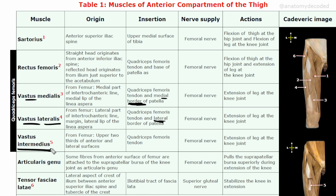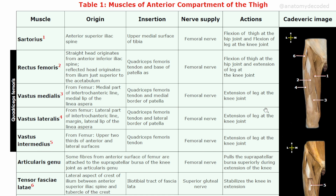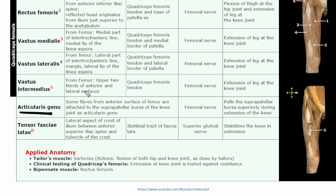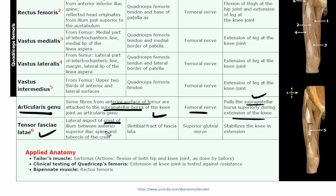Vastus intermedius arises from the anterior and lateral surfaces of the femur. Insertion is via the quadriceps femoris tendon to the patella. Nerve supply is the femoral nerve. Action is extension at the knee joint. Articularis genu consists of some fibers from the anterior surface of the femur attached to the suprapatellar bursa of the knee joint. Nerve supply is the femoral nerve. Action is pulling the suprapatellar bursa during extension of the knee, maintaining its stable position.